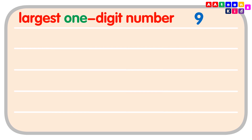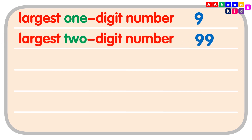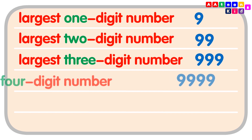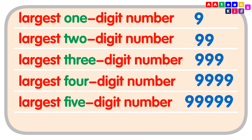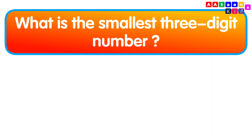The largest one-digit number is 9, or 1 times 9. The largest two-digit number is 99, or 2 times 9. The largest three-digit number is 999, or 3 times 9. The largest four-digit number is 9999, or 4 times 9. The largest five-digit number is 99999, or 5 times 9. The largest six-digit number is 999999, or 6 times 9.